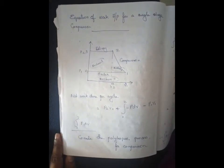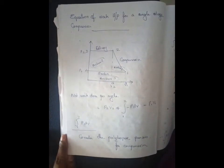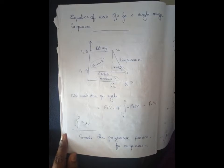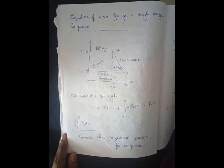This is the equation of work input for a single stage compressor. This is also the equation of the P-V Diagram.